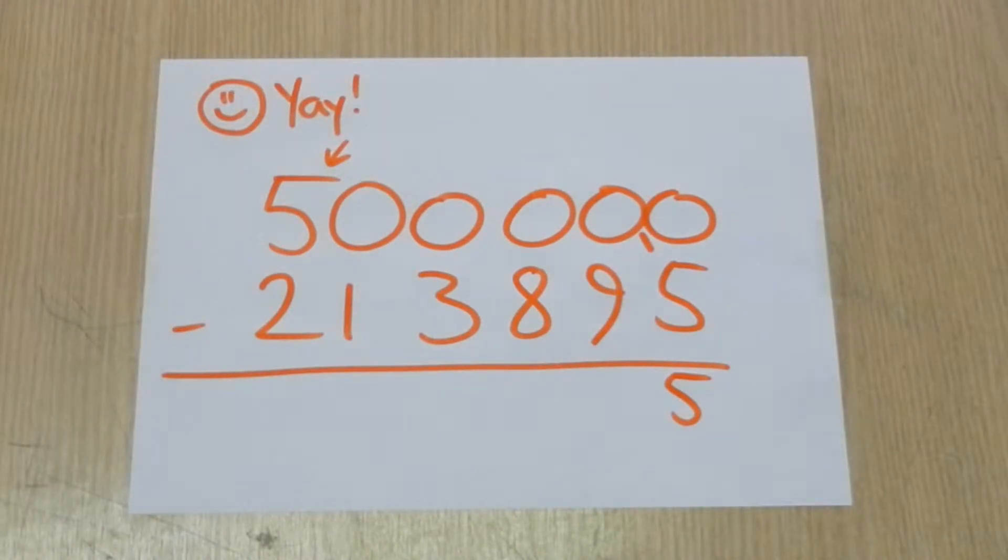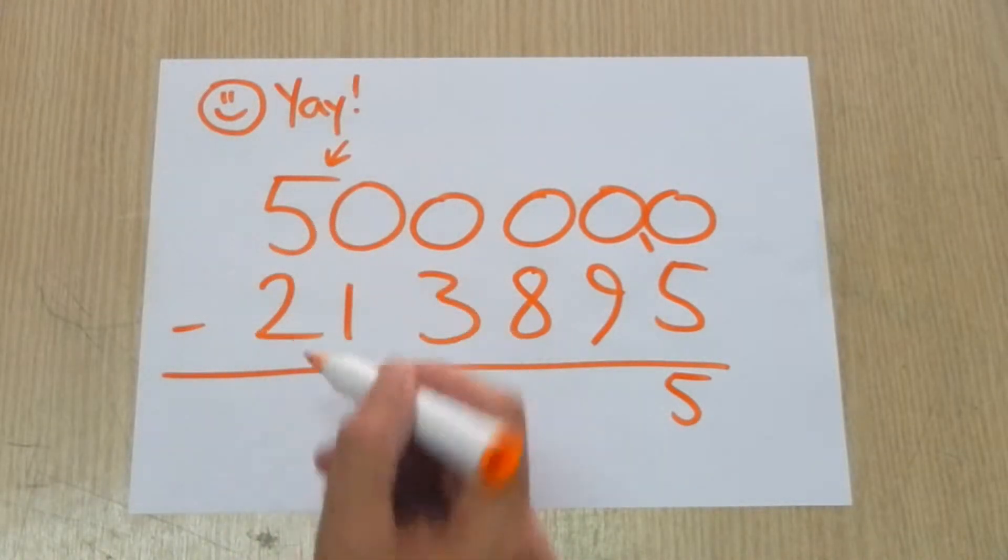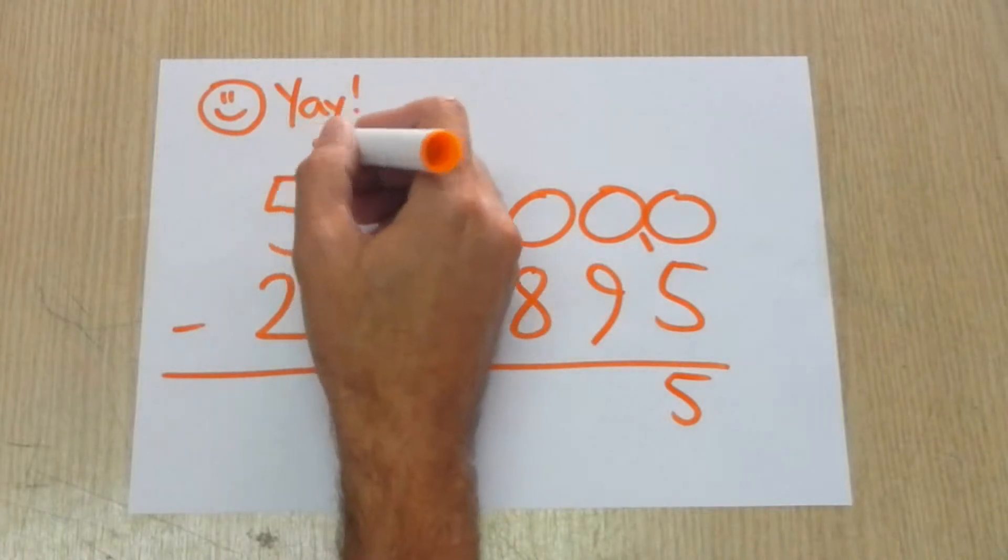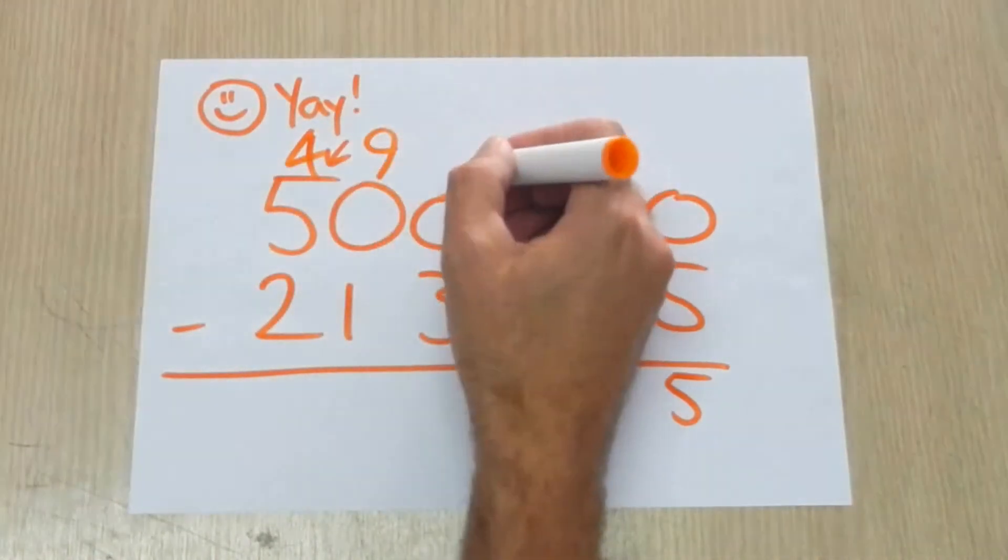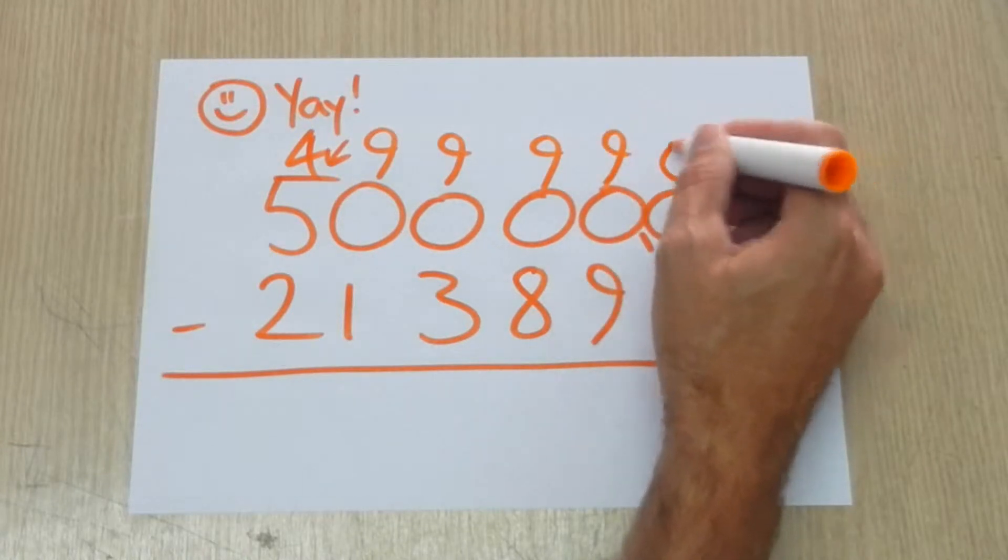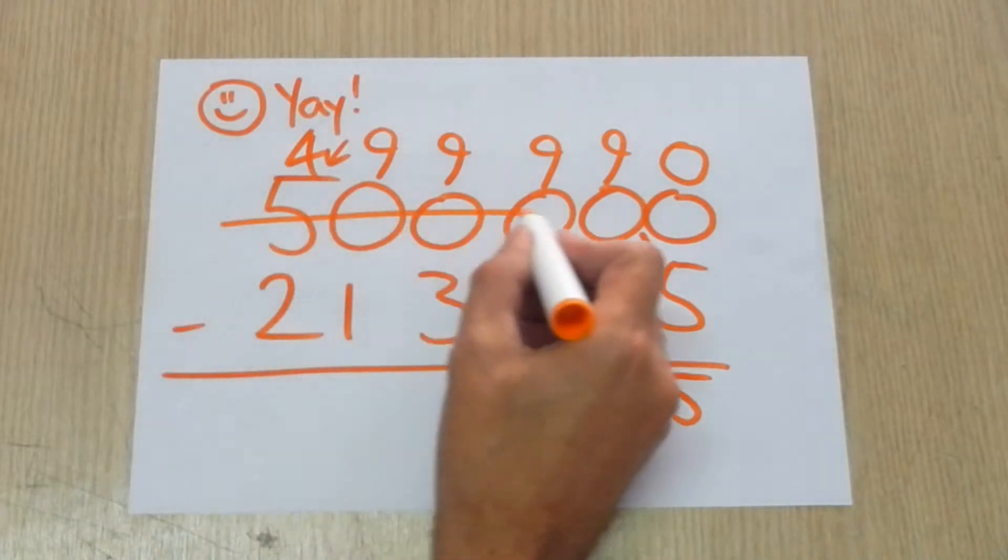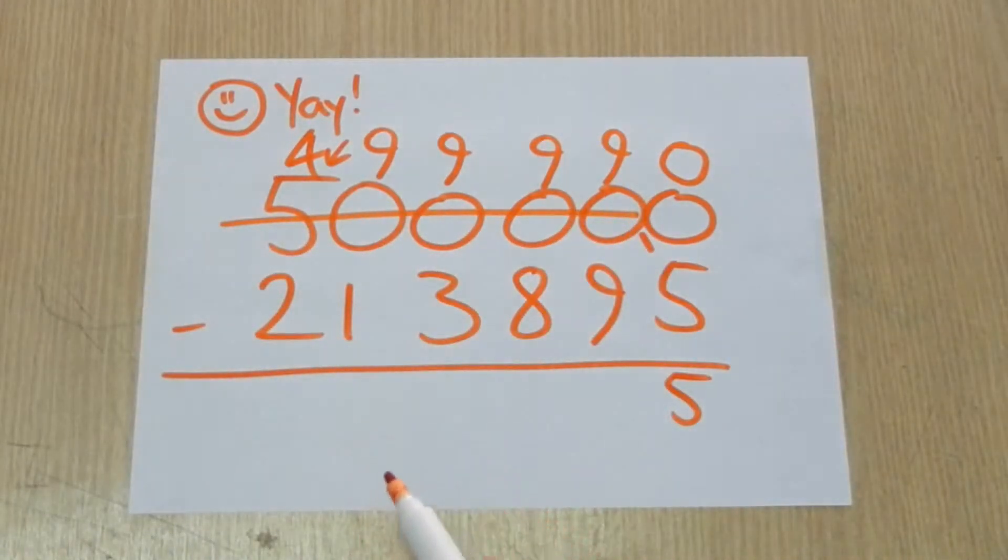100,000. Here we can say that 500,000 equals 499,000, 990, plus 10. To show that, we can cross out all the zeros, replace them with 9, and change 5 to 4.